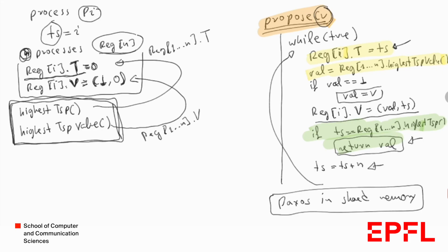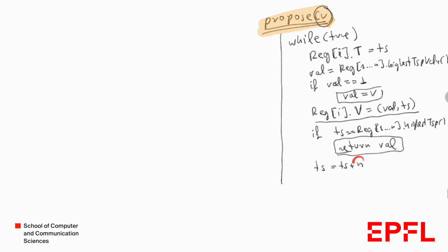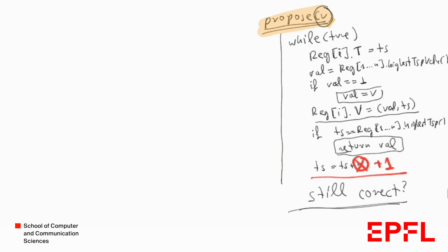Now let's perform one modification in the algorithm: instead of plus n we say plus 1. The question is, is this algorithm still correct after the change? This was a problem in the final exam of 2019. If somebody is suspicious enough, they would realize that plus n was there for a reason. So why was there plus n?